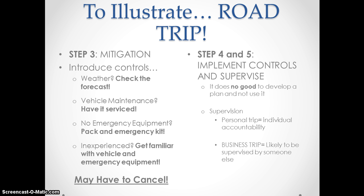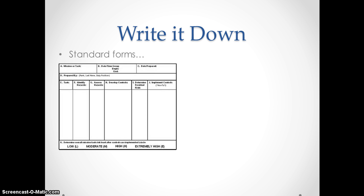Steps four and five: implement your controls and supervise. It does no good to develop a plan and not use it — we often see plans put on paper, shelved, and then something completely different is done. Supervision for a personal trip may just be individual accountability. On a business trip, it's likely to be supervised by someone else, requiring documentation that all steps have taken place and additional measures to ensure the driver is safe.